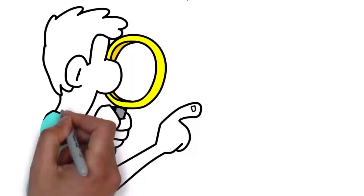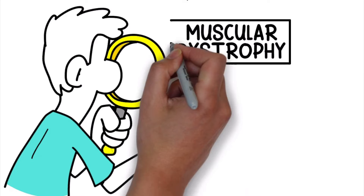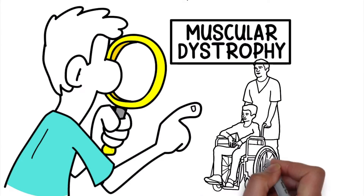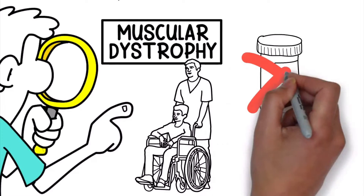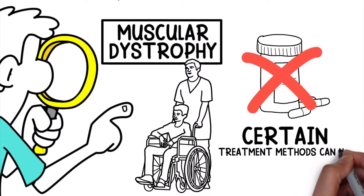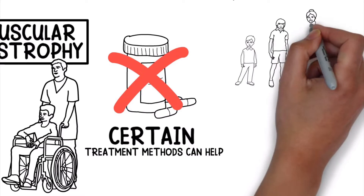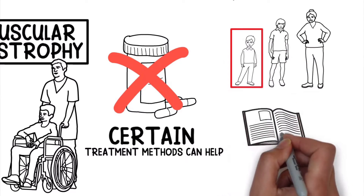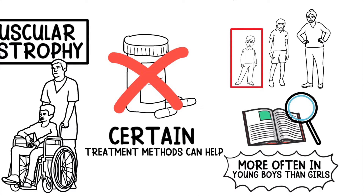Unfortunately, most people diagnosed with muscular dystrophy eventually lose their ability to walk and will require a wheelchair. At this time, there is not a known cure, but certain treatment methods can help. This condition can occur at any age, but most of the time the diagnosis occurs in children. Also note that studies found this disease to occur more often in young boys than girls.